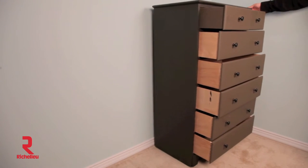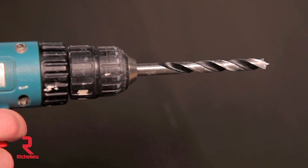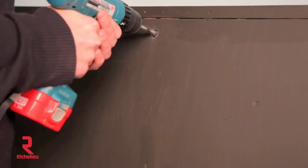When installing the furniture anti-tip kit, use a half inch drill bit to drill a small hole in the back of the furniture.